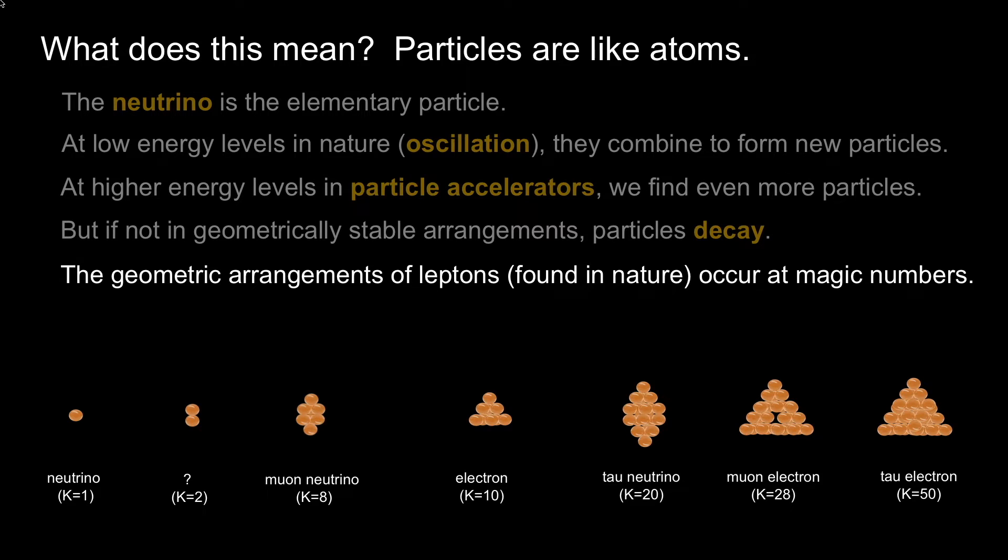The very typical arrangements they're decaying to, other than quarks, are leptons. I believe they occur because they're found at magic numbers. If we could get to the level of detail of finding what these particles arrange like, I think they're going to look something like this. These are the magic numbers: 2, 8, 20, 28, 50 that are also found in atoms.